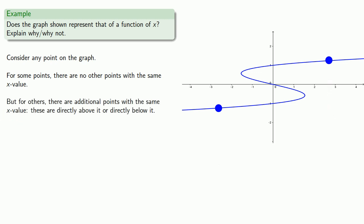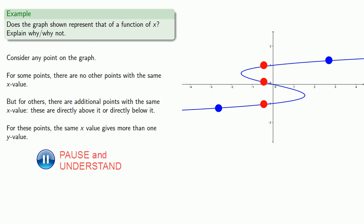But for others, there are additional points with the same x value. These are directly above it or directly below it. The important thing to recognize here is that for these points, the same x value gives more than one y value. So whatever determines y can't be a function.